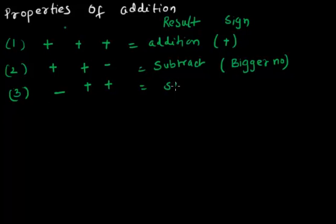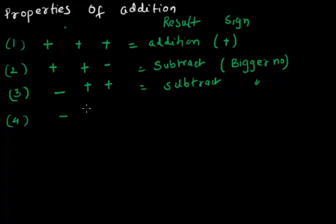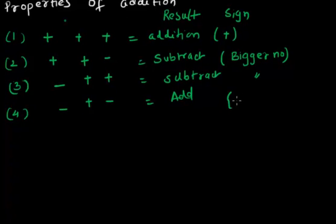If one negative and one positive, again we subtract and the sign will be of the bigger number. The fourth case is if you have both negative numbers, then again you add and the sign will be negative.